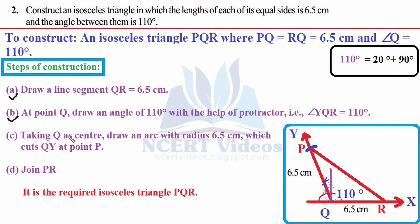Taking Q as center, draw an arc with radius 6.5 cm. First extend the ray to some length, then adjust your compasses to exactly 6.5 cm using a ruler and intersect the ray. Using compasses avoids measurement errors that occur with ruler alone. This intersection perfectly gives 6.5 cm. Now join PR to complete the triangle.